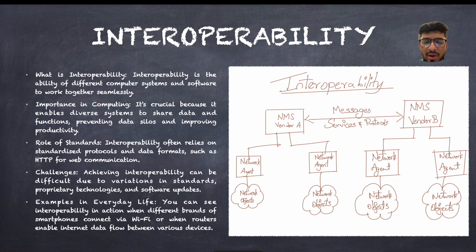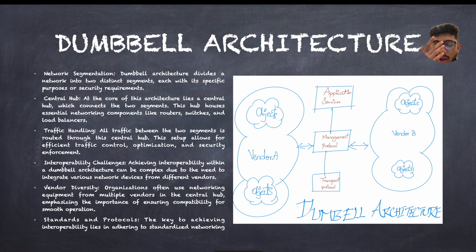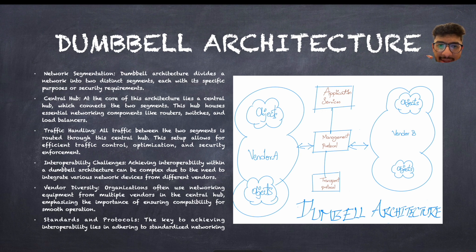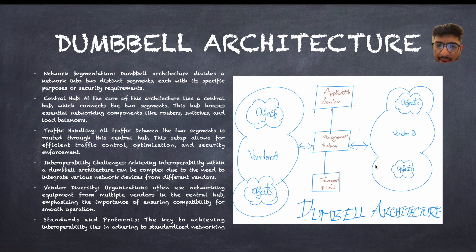Now let's talk about the dumbbell architecture. The dumbbell architecture on the right side looks like a dumbbell, which is why it's called dumbbell architecture. In this architecture, there is segmentation for all your network components. The dumbbell architecture divides a network into two distinct segments, each with specific purposes or security requirements. Each side of the dumbbell has its own security requirements.